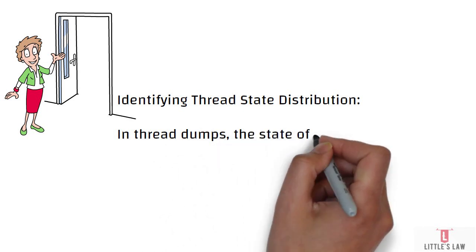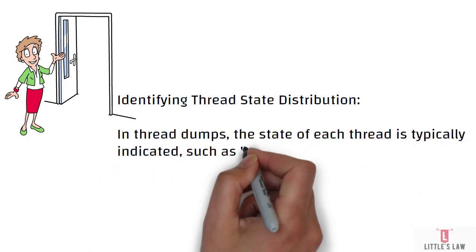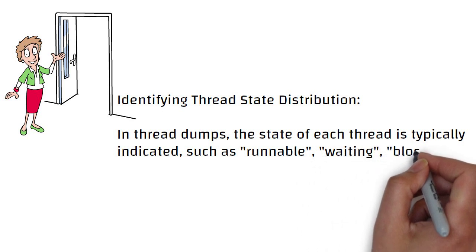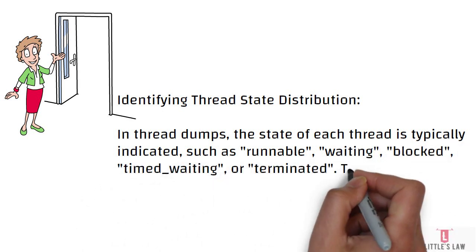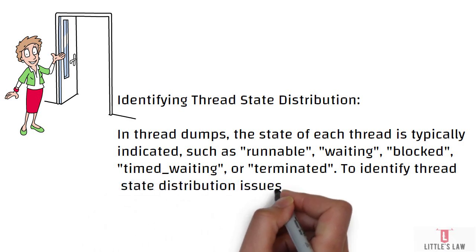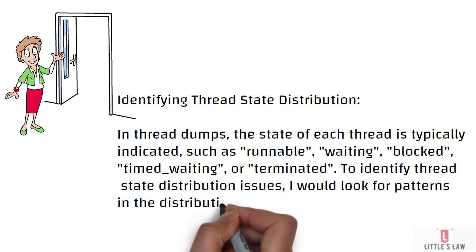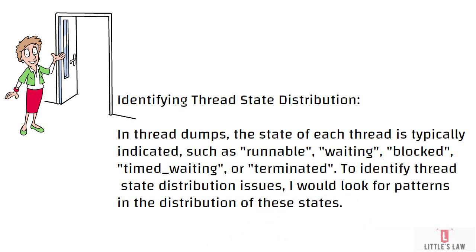When it comes to thread state distribution, in thread dumps there are multiple states for each thread, typically indicated as runnable, waiting, blocked, timed waiting, or terminated — five states in total. To identify thread state distribution issues, you would look for patterns in the distribution of these states. When giving a theoretical answer, always come up with an example to show how knowledgeable you are.